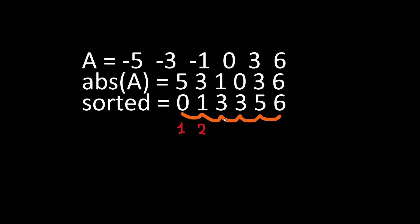If they are equal we skip incrementing the counter. Here we have our first element zero, so we have one element. Then we have number 1 which is different than 0, so our counter is 2. Then number 3 gives us 3 distinct elements. Then we have number 3 again, so we don't increment our counter.